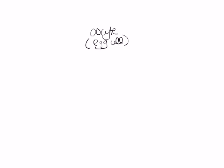The oocytes develop each month in the ovaries, so they're coming from the ovaries. Inside the ovaries is a follicle, which is a set of cells that allows them to mature and then release. Just like the sperm mature in the epididymis, the oocytes mature in the follicles.